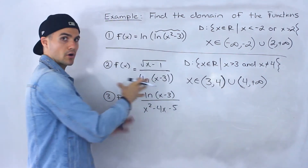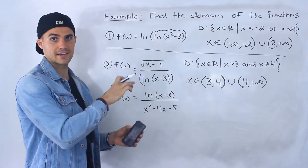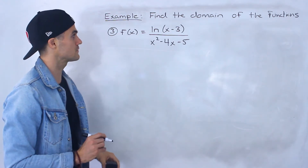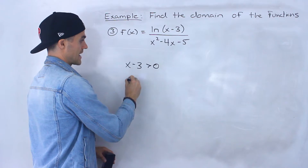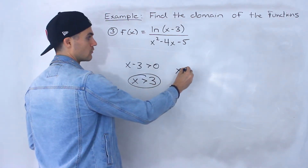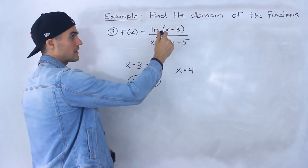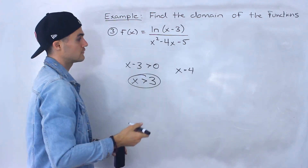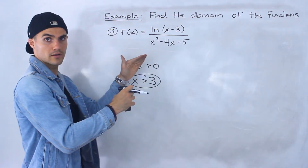Make sure you're looking at each part of the function and all the cases. With a rational function, always find when the denominator equals zero — x cannot equal that value. The third function is f(x) equals ln of (x minus three) over x squared minus four x minus five. We have ln of (x minus three) again, so x minus three must be greater than zero, meaning x must be greater than three. Notice that in this case x can equal four, because here the ln of (x minus three) is in the numerator, not the denominator. Zero divided by a number is zero, but you can't divide by zero.